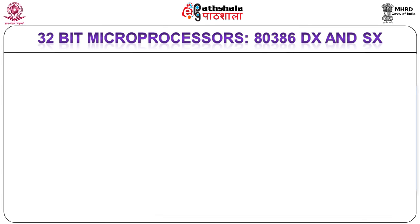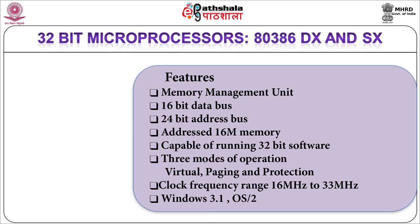The 80386 was Intel's first 32-bit microprocessor with 32-bit internal registers. It can address 16 MB of physical memory and works with clock frequencies from 16 to 33 MHz. The most important feature is the addition of a memory management unit to manage memory with an operating system. The 80386 supports three modes of operation: virtual, paging and protection. It is available in different versions: DX, SX, SL, SLC and EX, where DX and SX are identical except that SX is a lower cost version.